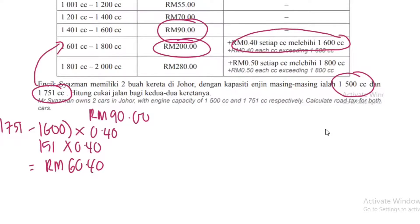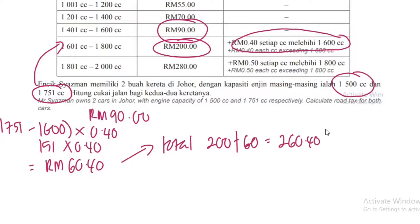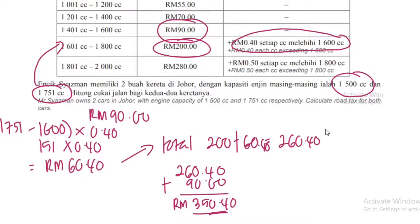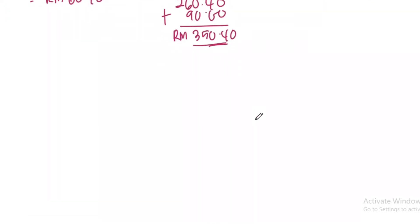Total untuk 1700cc: 200 tambah 60.40 = RM260.40. Jumlah keseluruhan: 260.40 tambah dengan 90 = RM350.40. Senang je. Sebab kena rujuk jadual — dia tambah 4 sen bagi setiap cc lebihan tu. Settle.